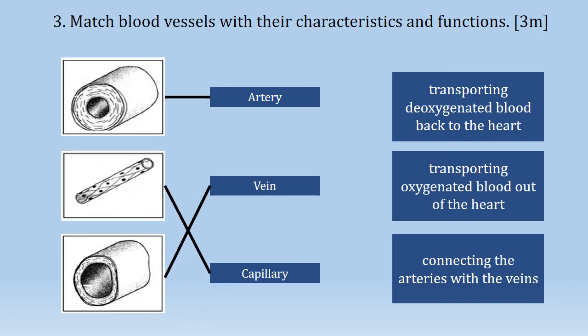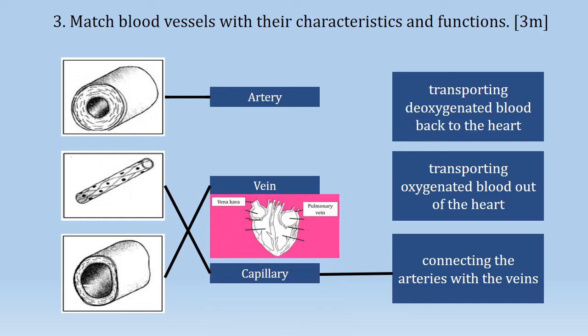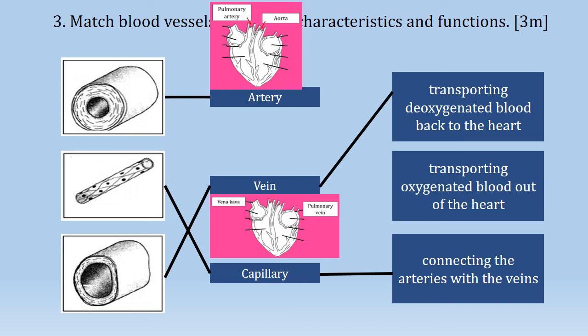Then we continue matching structures to functions. First, the capillary matches to connecting the arteries with the veins. To know the function of veins, we must remember the functions of pulmonary veins and vena cava. Reading the first box description, it refers to the function of vena cava — transporting oxygenated blood back to the heart. Finally, to know the function of the artery, we look at the functions of the aorta and pulmonary artery. Reading the second box description, it refers to transporting oxygenated blood out of the heart.